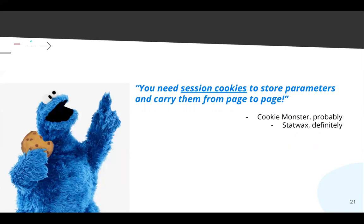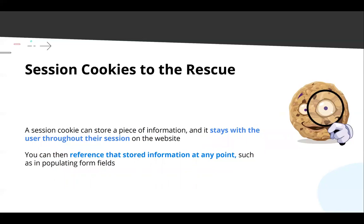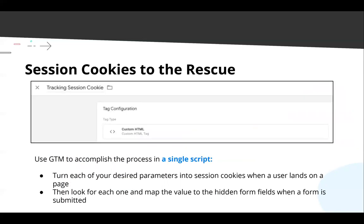Session cookies are what make it happen. Cookie Monster is perfect for this — session cookies are the most important piece of what we're building here for this closed loop system. A session cookie is created when someone arrives on the website and it stores a piece of information. That information follows the user from page to page the entire time they're on the website, and at any point with a little bit of code we can recall the value of that cookie and do something with it.